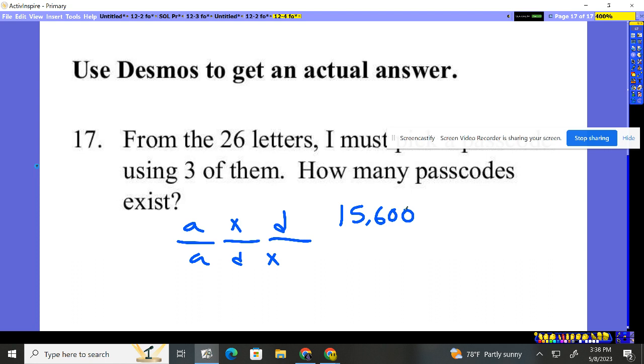So there you have it. Desmos helps us calculate these things pretty easily. We just have to decide, is it a combination or a permutation? This was a permutation, so we use the permutation button.